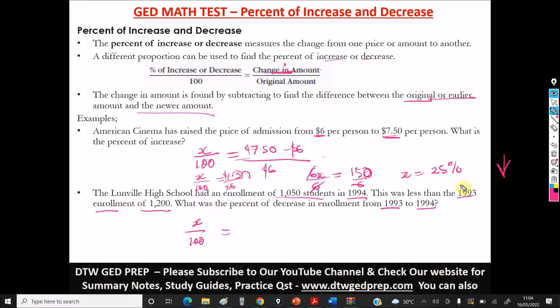Now, what is the change in amounts? Is the difference between the original and the earlier. And what's the original? The original amount is 1993, not 1994. Because this is the earlier, they said, what's the percent decrease in enrollment from 1993 to 1994? So we have 1,200 minus the number of students in 1994, 1,050, divided by our original amount is what? 1,200, that's the 1993, 1,200.